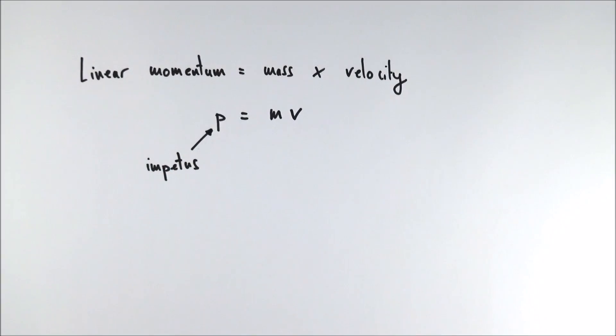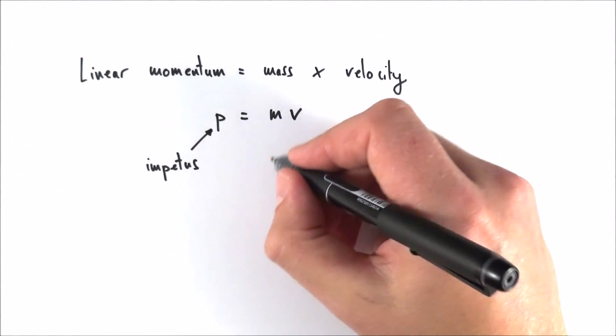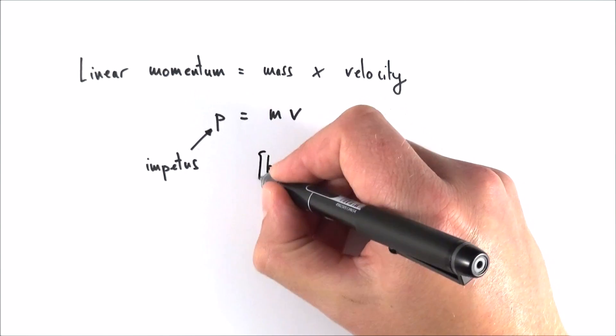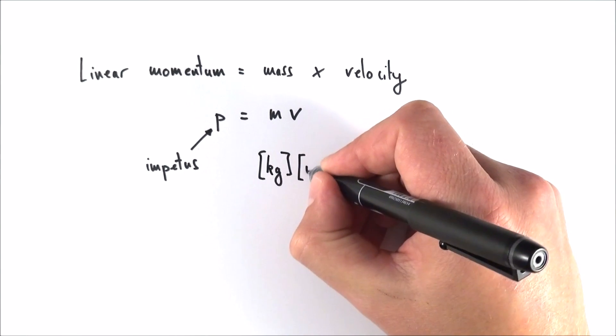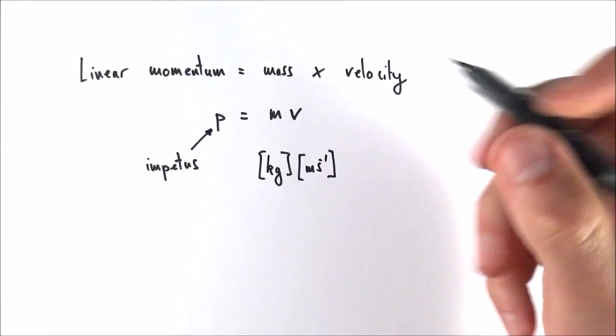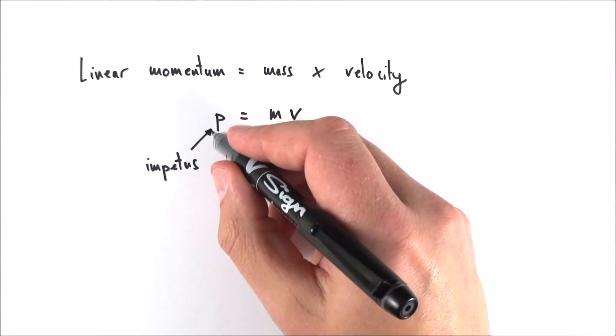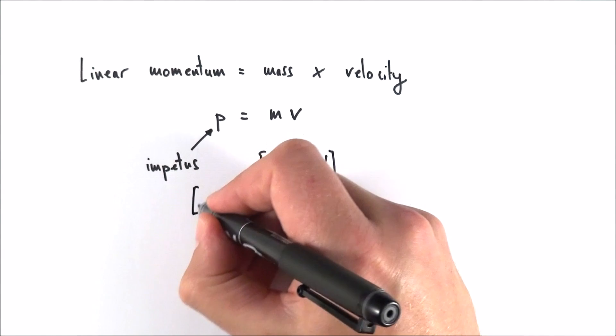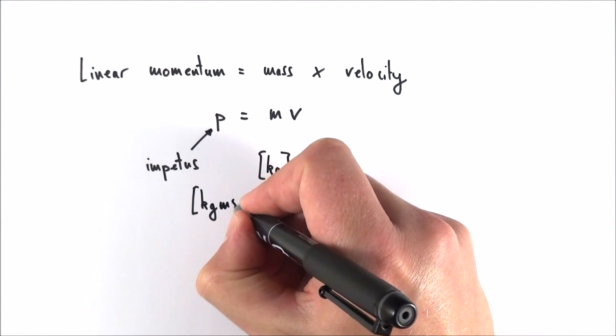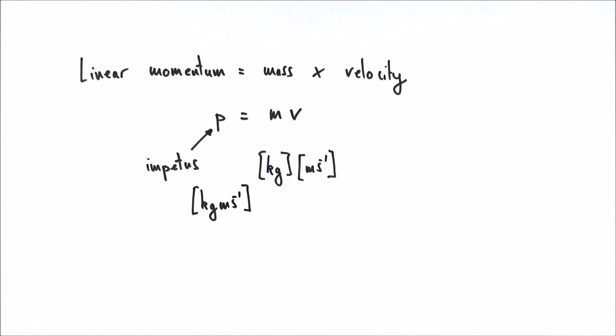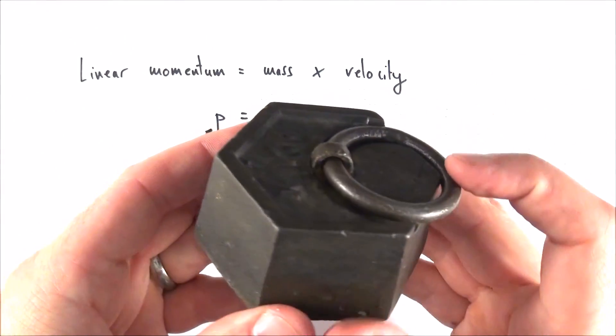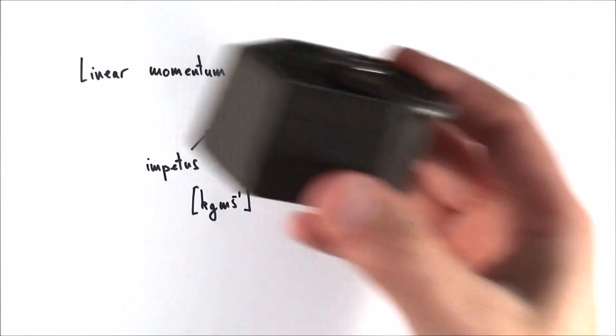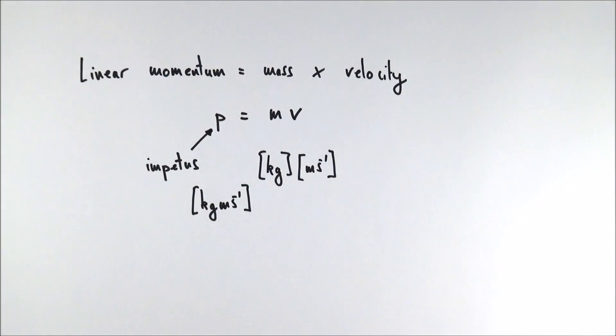Now in terms of the units, we always measure mass in kilograms and we measure the velocity of an object in meters per second. And therefore this means that the units for impetus or linear momentum are kilogram meter per second. So if we think about one kilogram or a mass of one kilogram moving at one meter per second, then that would have a linear momentum of one kilogram meter per second.